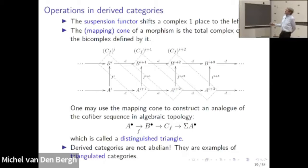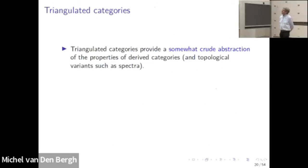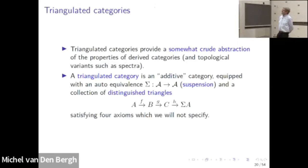Some operations do survive, and they come from algebraic topology. There is something called suspension — in algebraic topology this just amounts to shifting the complex — and there's also an operation called mapping cone. With suspension and mapping cone, we can define what in algebraic topology would be called the cofiber sequence, and here it's called the distinguished triangle. Derived categories are not abelian; they're examples of triangulated categories. A triangulated category is an additive category with an auto-equivalence called suspension and a collection of distinguished triangles satisfying four axioms — the last one is particularly complicated.